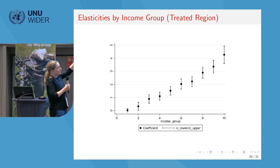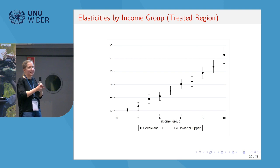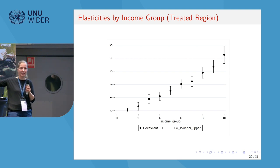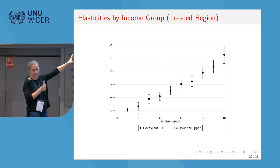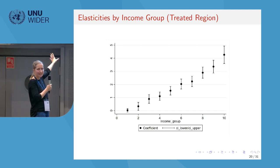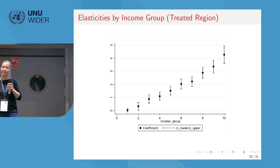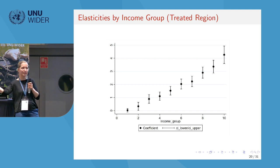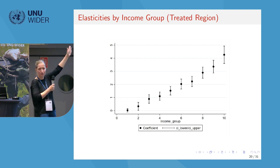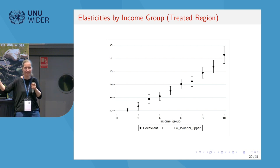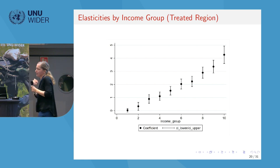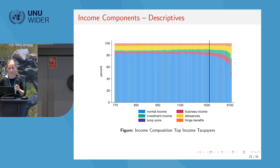The graph already suggests that the response increases across the treated taxpayers. Looking only at the treated group, we see the elasticity of taxable income across the treated region in deciles — the upper decile being the very highest earners within the treated region. High-income individuals within the treated region respond more strongly the higher up their income.